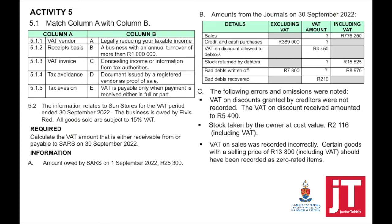Question 5.2. The information relates to some stores for the VAT period ended 30 September 2022. The business is owned by Elvis Red. All goods are subject to 15% VAT. Calculate the VAT amount that is either receivable from or payable to SARS on 30 September 2022. We need to calculate if we owe SARS or if SARS owes us, based on the VAT amounts across all these transactions.